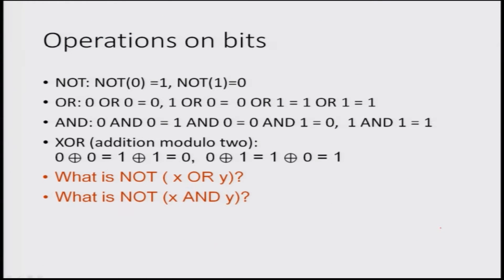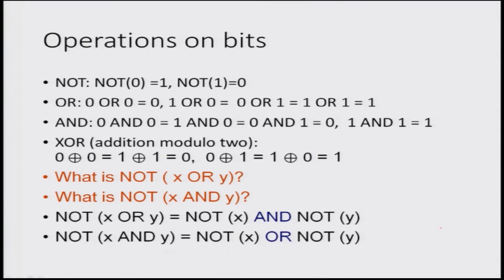Here are some simple operations on classical bits. The NOT gate is one of the major starting points for computation in the classical sense; the OR gate — these are all reversible. However, AND is not a reversible gate. Addition modulo 2 (XOR gate) is also a reversible gate because it is a combination of the OR and the NOT gate. In terms of classical computing it is possible to have gates which are non-reversible, and that is why the AND gate is possible.